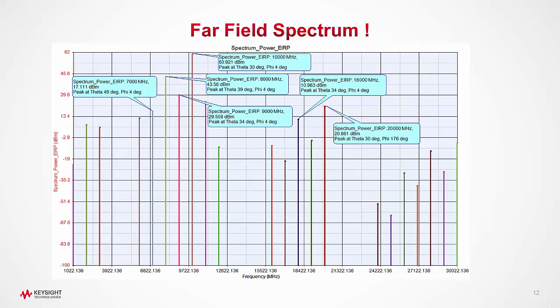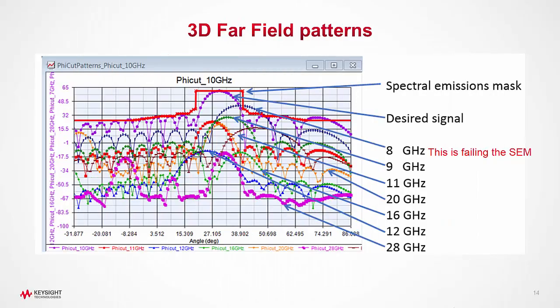So that brings us to graph number three, where we plot the phi cut superimposed with the spurious emissions mask as shown here in graph number three. We can easily see that the main signal is fairly passing the spectral emissions mask.